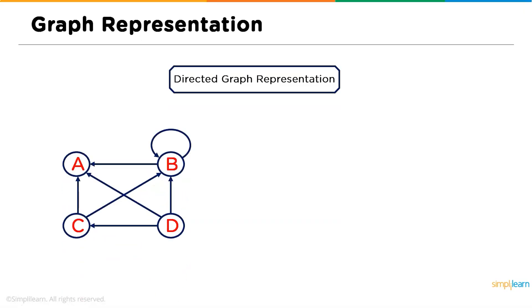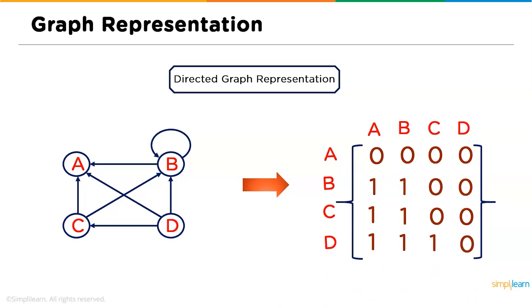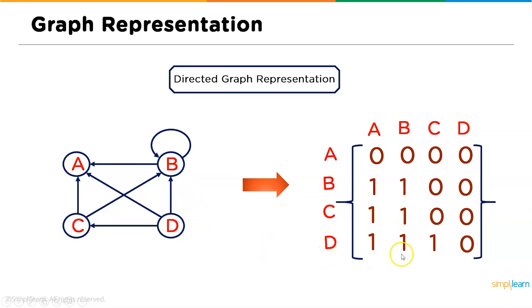Now, directed graph representation using adjacency matrix. The simple difference between directed and undirected graph representation is that here we have directions. So B is connected to A, but A is not connected to B — we write it as zero because control traverses from B to A but not from A to B. For example, from D to B we have one connection in the direction D to B, so we represent that cell as one.